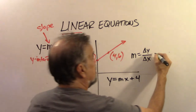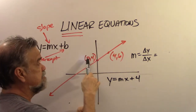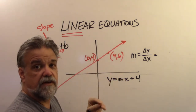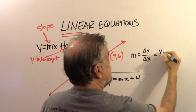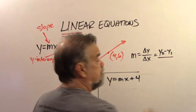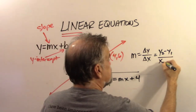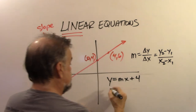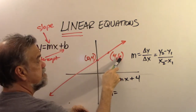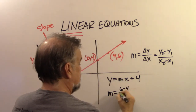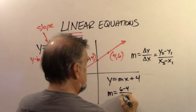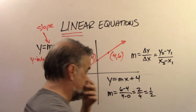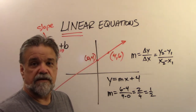If you call one point (x1, y1) and the other (x2, y2) — and by the way, it doesn't matter which one you label which, as long as you're consistent — it's going to be the difference in y's, y2 minus y1, over the difference in x's, x2 minus x1. In this case, the slope is 6 minus 4, over 4 minus 0, which turns out to be 2 over 4, which is 1/2. The slope of the line is 1/2.